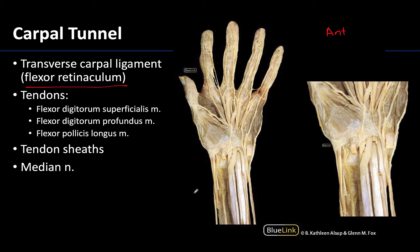Those long tendons from the anterior compartment of the forearm — you can see them here in the forearm — they are traversing through this relatively small area. These are the muscles that are going to have a distal attachment to the phalanges. These include the flexor digitorum superficialis, flexor digitorum profundus, and the flexor pollicis longus. Both of the first two have four tendons each, and then there's one tendon associated with the flexor pollicis longus.